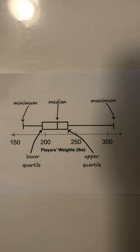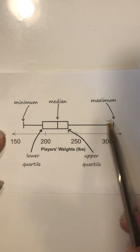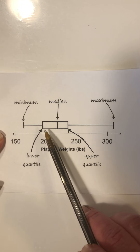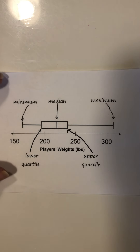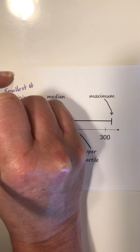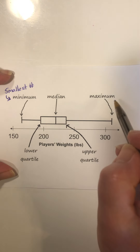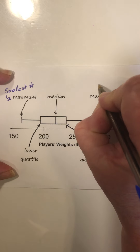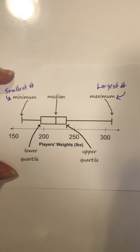Hello Panthers, today we are going to learn about a box and whiskers plot. A box and whiskers plot looks like this — you will have two whiskers and then your box in the middle, that's why it's called box and whiskers. One of the whiskers is the minimum number, that is the smallest number. The other whisker on the other side is the maximum, which is the largest number.